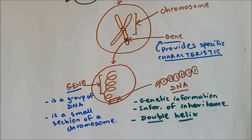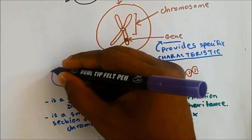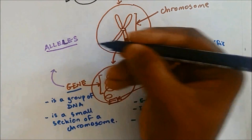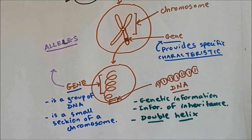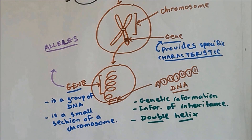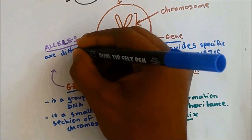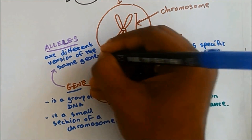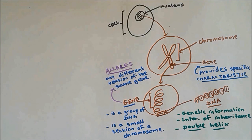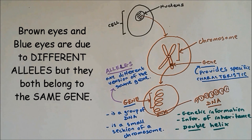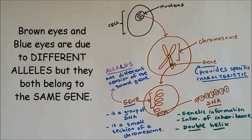A gene can also be called an allele. Alleles are different versions of the same gene. For example, a gene for eye color can be brown or blue — the brown and blue versions are known as alleles, but they both belong to the same gene, which is the eye color gene.